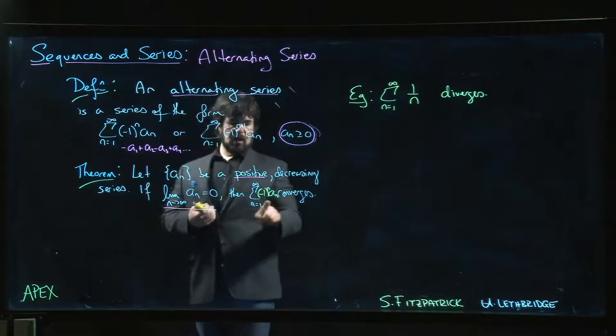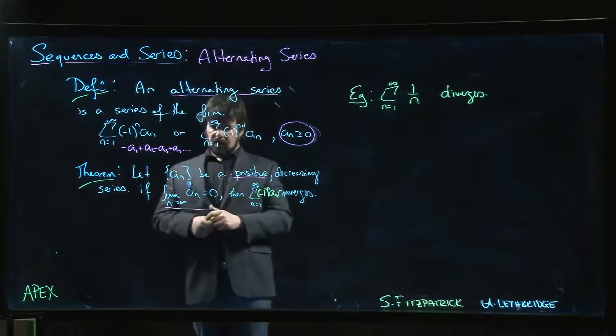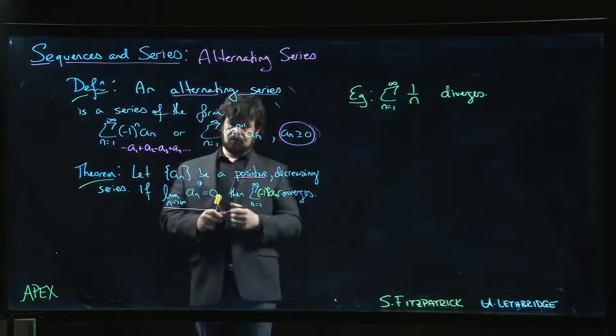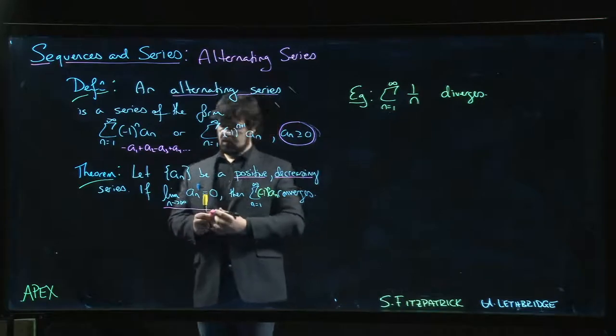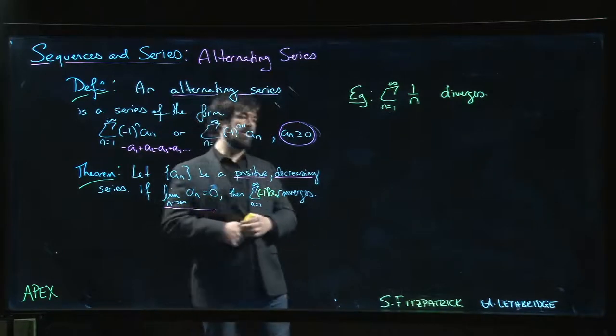Minus one to the n times a_n—it needs to be an alternating series. The a_n's are positive so that this becomes alternating. For an alternating series, as long as the a_n's are positive and they're decreasing, then it turns out it is good enough to have the a_n's go to zero.